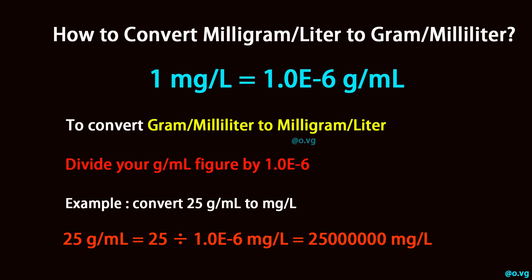To convert gram per milliliter to milligram per liter, divide your gram per milliliter figure by 1.0 times 10 to the power of negative 6.